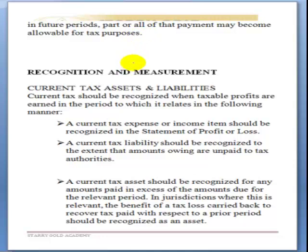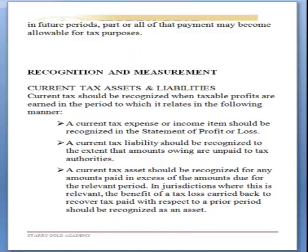Regarding recognition and measurement criteria — the accounting treatment — how are we expected to treat this in our financial statements? For current tax assets and liabilities, current tax liability must be recognized in the statement of profit or loss to the extent of the amount owed and unpaid to the relevant tax authority. Where excess tax has been paid, that excess should be recognized as an asset in the statement of financial position.